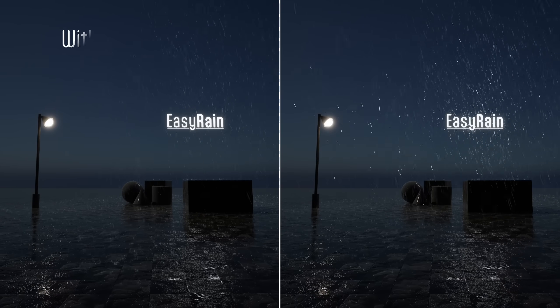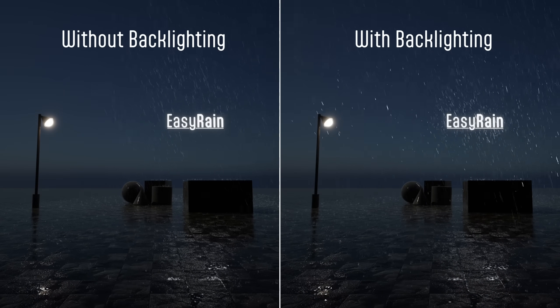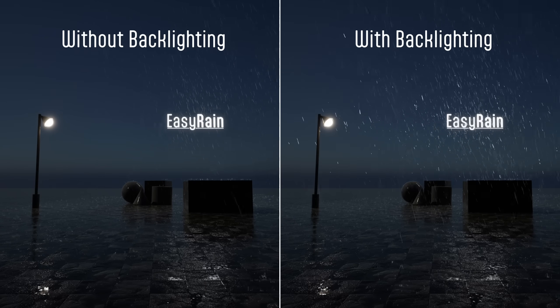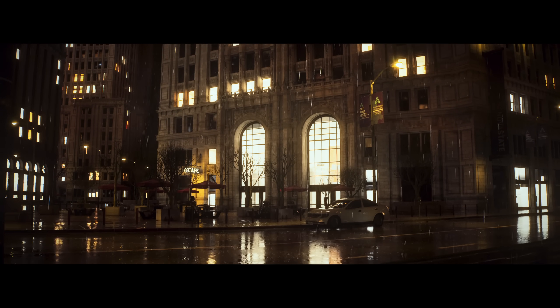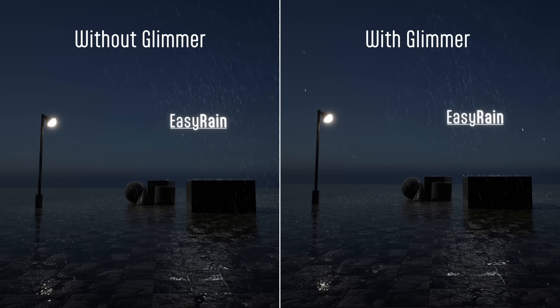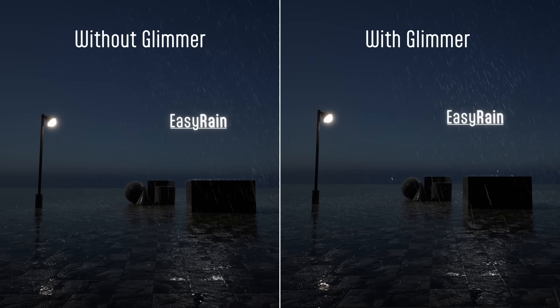Rain backlighting adds shimmering pings and helps the rain really glow around lights and lit surfaces, mimicking how we see rain in real life. A before and after comparison gives you a clear indication of what this does. I absolutely encourage the use of this, especially in nighttime scenes — that is how I got the pinging glints on the raindrops in certain shots. Rain glimmer adds a glinting effect to the rain that works really well when combined with backlighting.